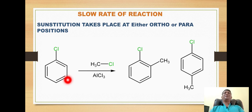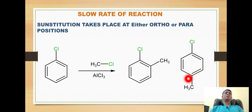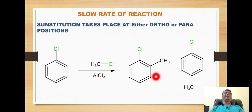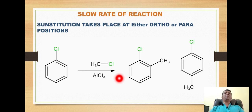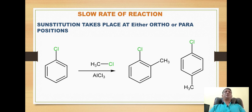For example, when chlorobenzene is reacted with methyl chloride in the presence of aluminum chloride, we get two products: 2-chlorotoluene and 4-chlorotoluene, with the 4-chloro product being the major one. The rate of reaction is slow, requiring several hours for completion, while the electrophile is introduced at the ortho and para positions. This confirms that halogens are deactivating groups but are still ortho-para directors.